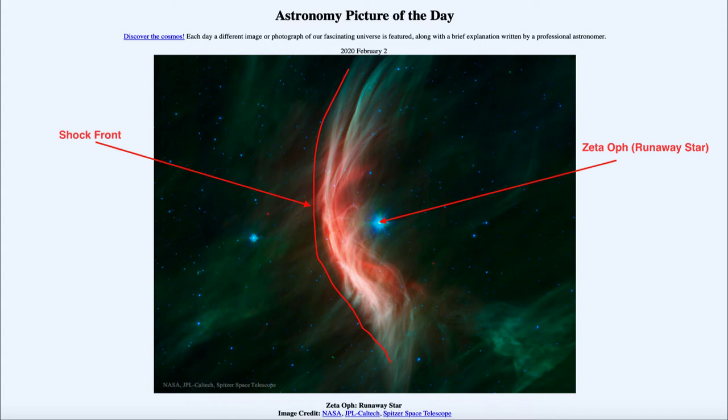So what would accelerate a star to such a high speed? And what astronomers believe happens is that it was probably part of a binary star system at one point, that there were two stars, and then something happened to that second star and it exploded as a supernova. So if that star would explode, it would lose a lot of its mass, changing the mass of the system and possibly flinging this star out on its runaway path.